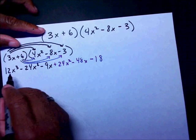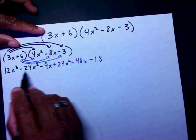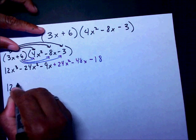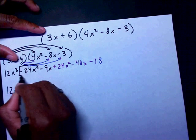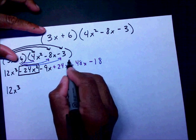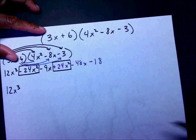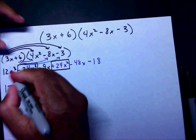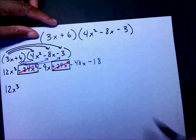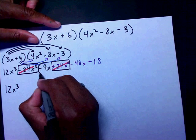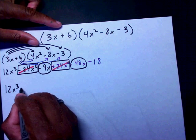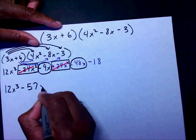Combining like terms: I only have one x cubed, so I write 12x cubed. Negative 24x squared and positive 24x squared cancel each other out. I have negative 9x and negative 48x, which gives me negative 57x. And negative 18 on the end.